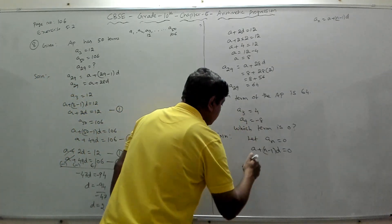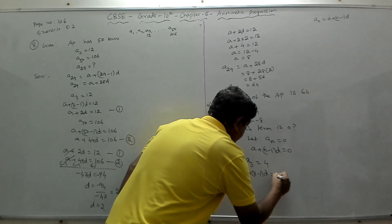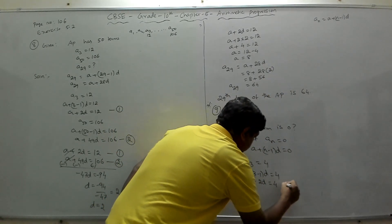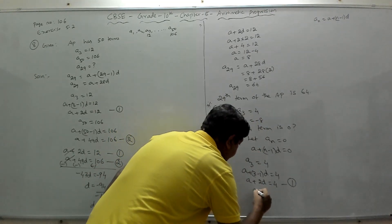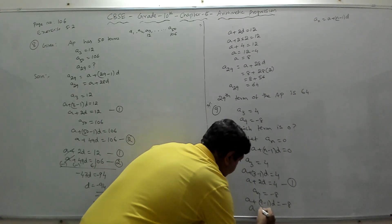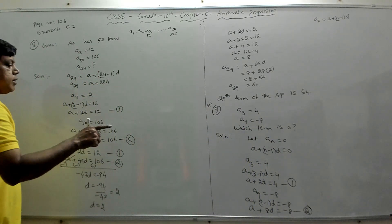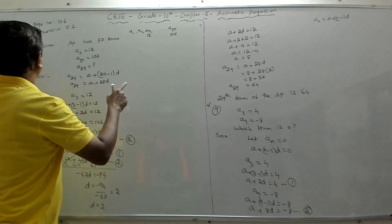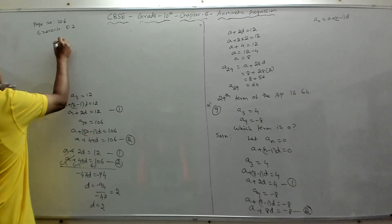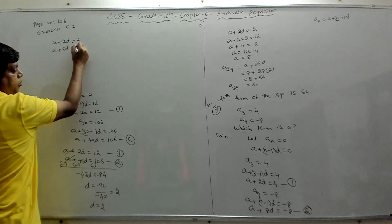From a3 = 4: a + 2d = 4 — equation 1. From a9 = −8: a + 8d = −8 — equation 2. Subtracting equation 1 from equation 2: 6d = −12, so d = −2.